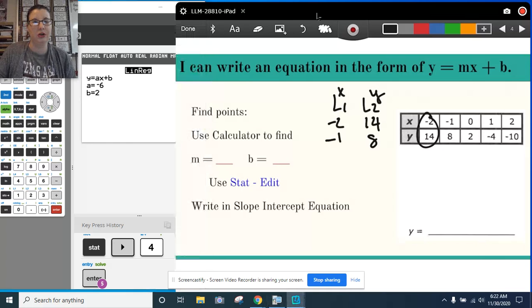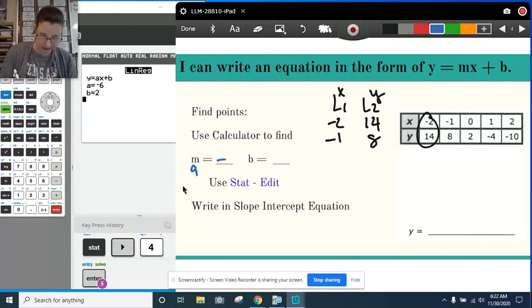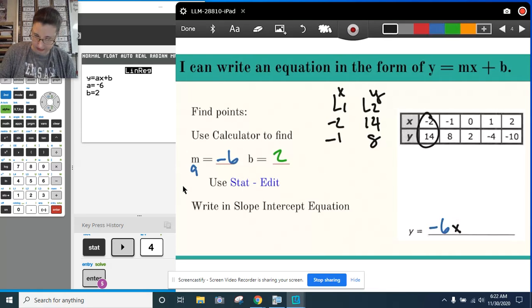And it tells me a equals negative 6 and b is 2. Now what this means is our rate of change, or our slope, is our a. Remember, a just is another word for slope, or another calculator used for slope. It's negative 6. And our b is 2. Now when I write this equation, I've got y is equal to negative 6x, and then plus 2.